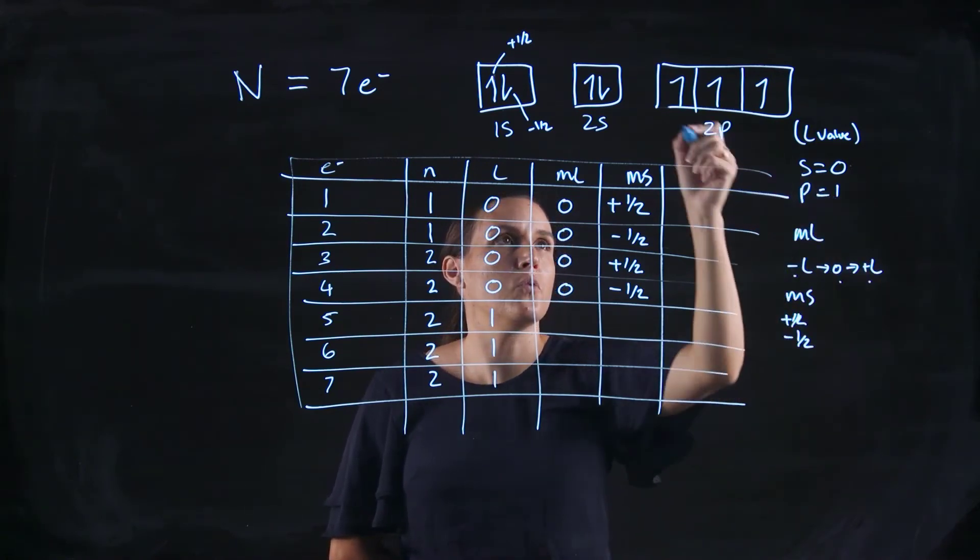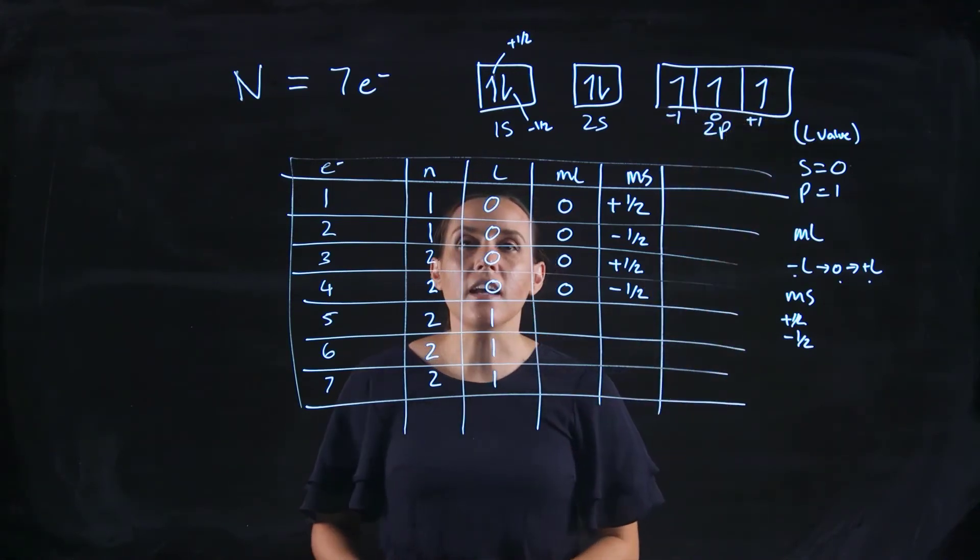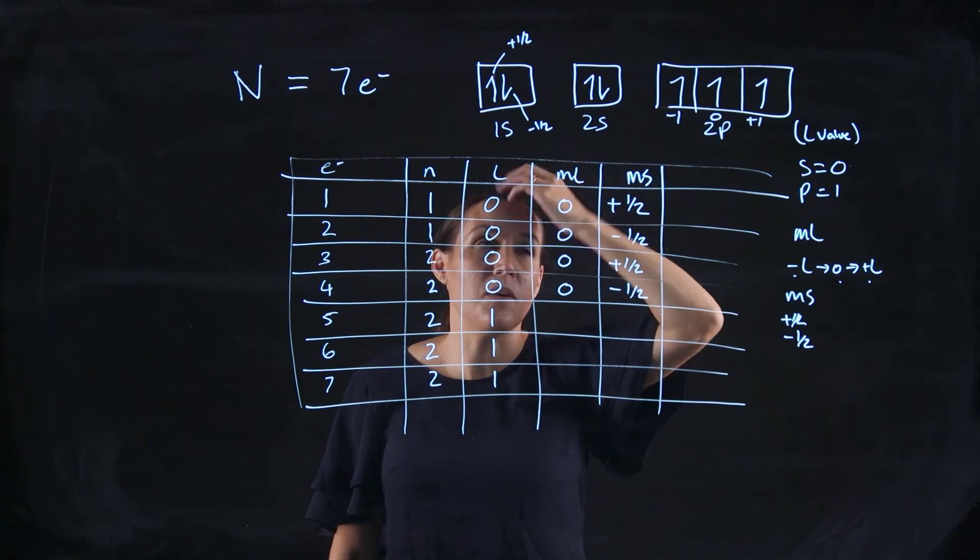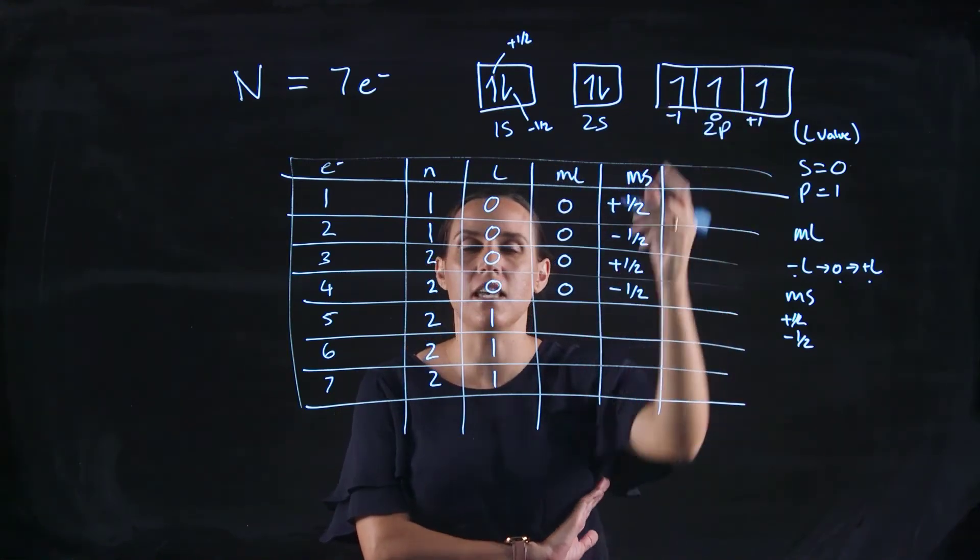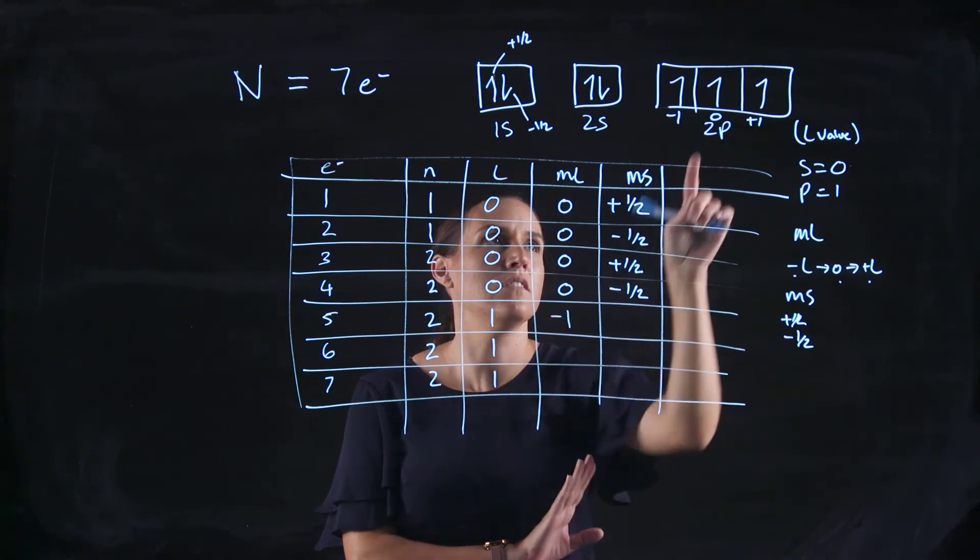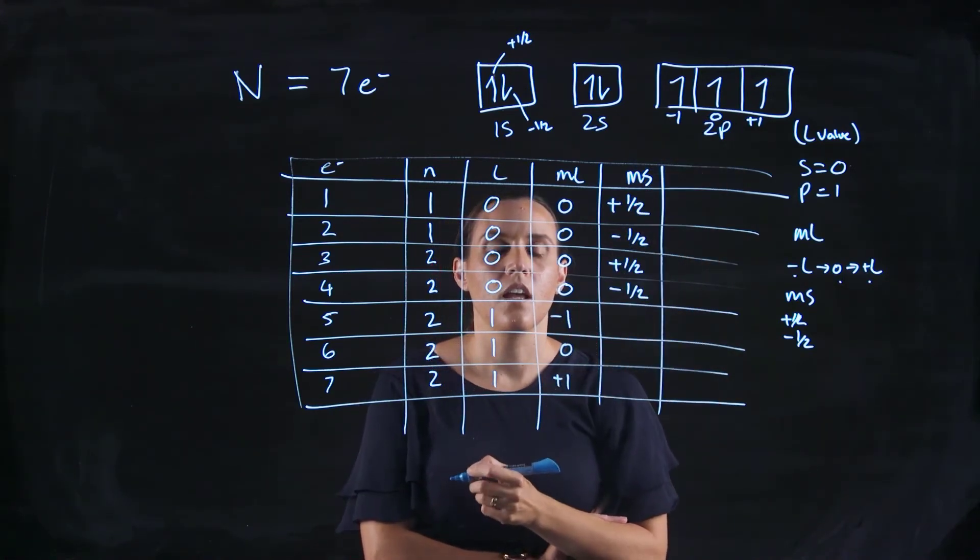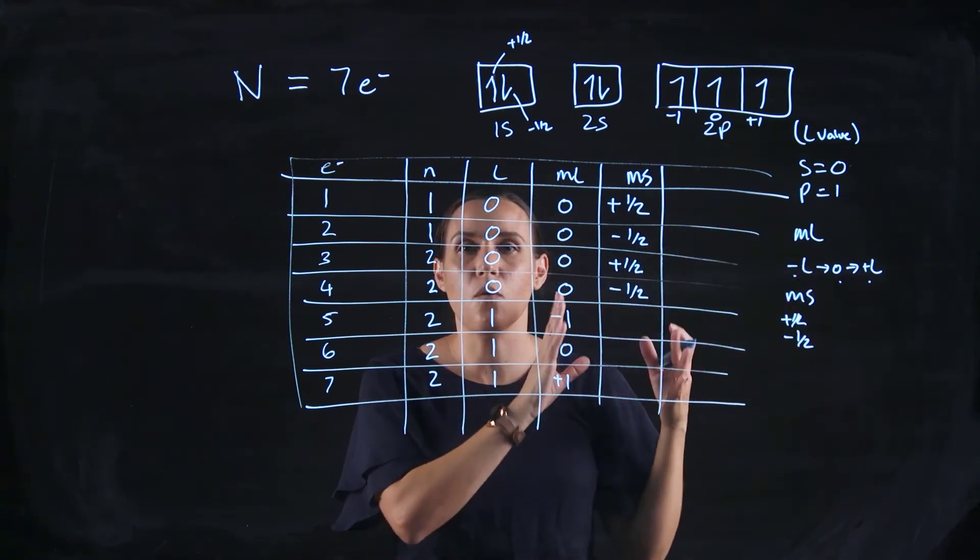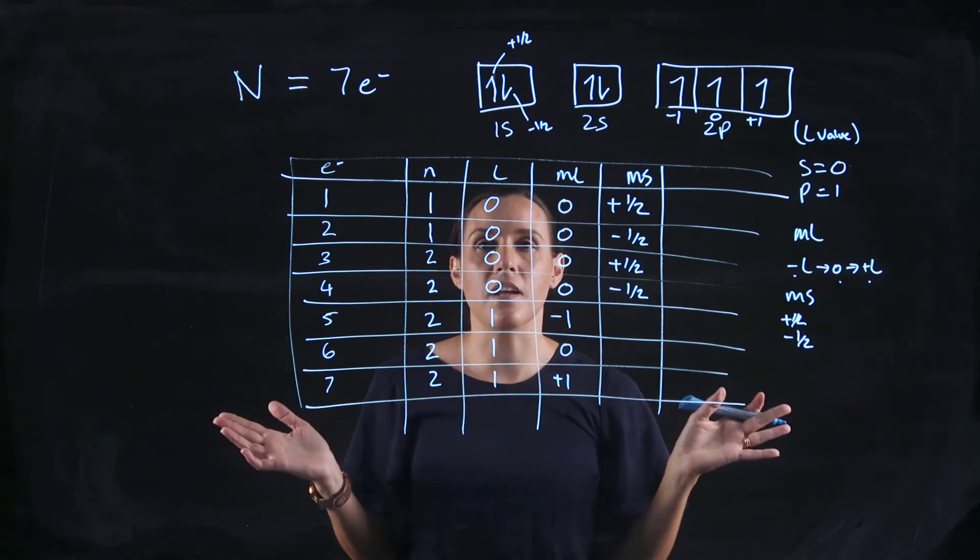So for 1, it would be minus 1, 0, and plus 1. I can write that up on my orbital diagram and then just copy it down. My first electron from that set, number 5, would be minus 1, 0, and then plus 1. Now it doesn't matter which order you do that, as long as you get 1 in each of them. I might go 0, plus 1, minus 1. It doesn't matter.